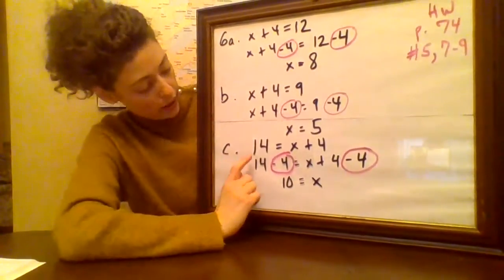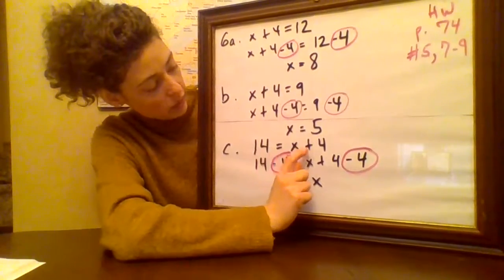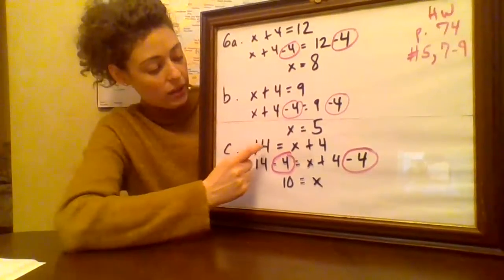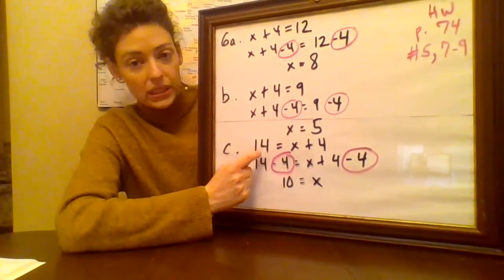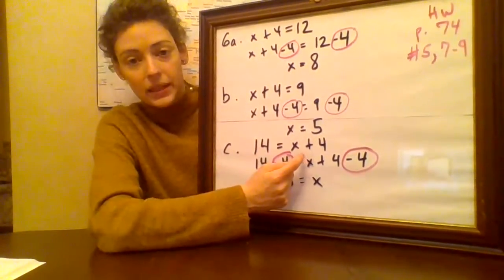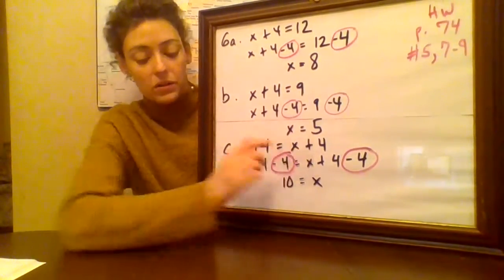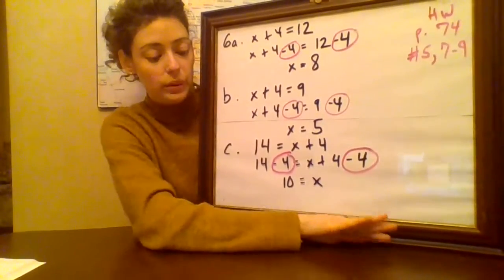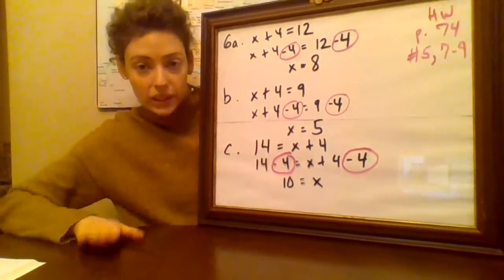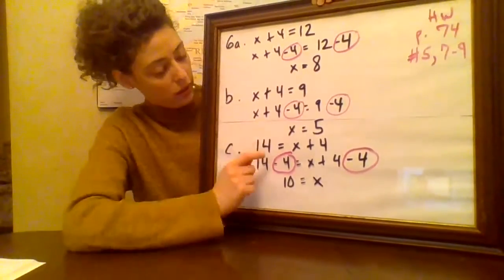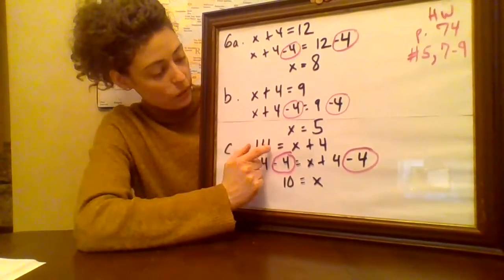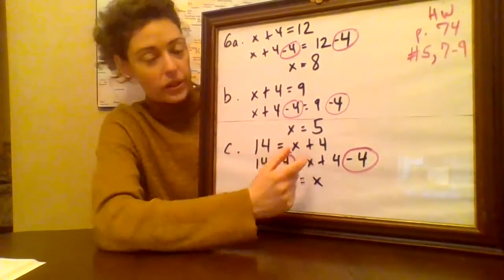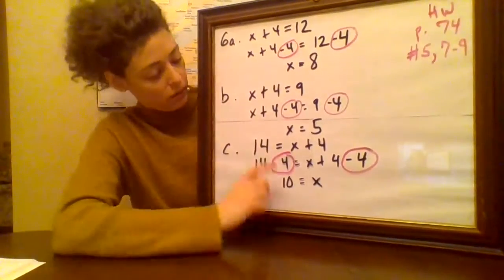Let's try one more here. If 14 equals x plus four. Now this one is written a little bit differently. Do you see how we have the 14, the number on this side and the x is on the right side? That doesn't matter. Just like when I had these two piles of carrots and the brown bag was over here, it would have been fine to move that pile over here and that pile over here. It doesn't matter which side things are on.